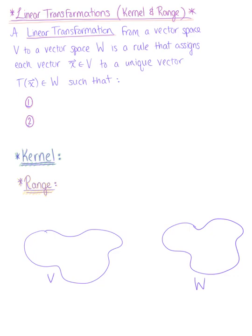Here we take a quick look at linear transformations, in particular looking at the kernel and the range and how they relate to the null space of A and the column space of A.